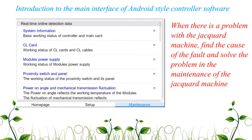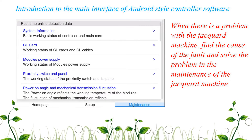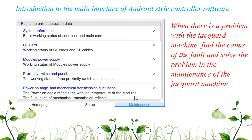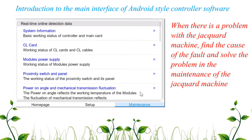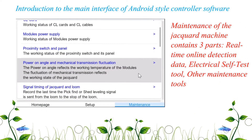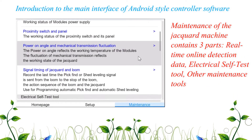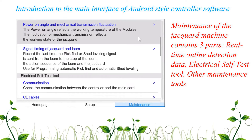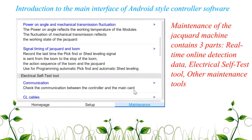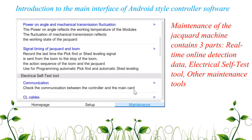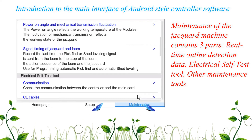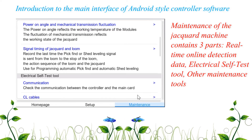find the cause of the fault and solve the problem in the maintenance of the Jacquard machine. Maintenance of the Jacquard machine contains three parts: real time online detection data, electrical self test tool, and other maintenance tools.